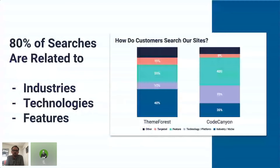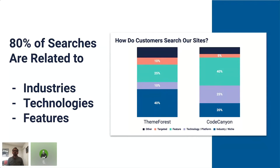Before we jump into the demand trends across ThemeForest and Code Canyon, I'd like to talk a little bit around how people search for content on our shopfronts. I'm not talking about the user flow that a customer may follow — so for example, what filters or what facets they might click on to refine their search. Instead, I wanted to talk about the language that we see our customers using when searching for content. This can be really helpful for you guys to keep in mind when you're thinking about what types of items to create, but also really importantly, how to market them. When customers are searching for content on our shopfronts, they obviously can use thousands upon thousands of different search terms to try and find the items they're looking for.